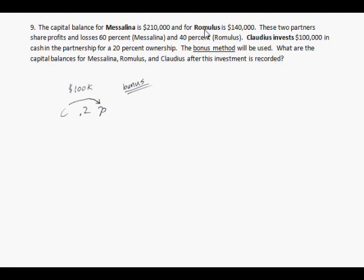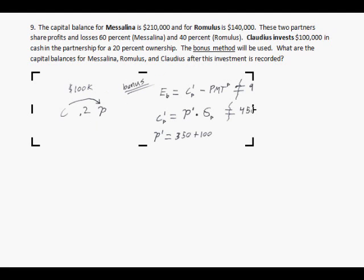But in this problem, we're using the bonus method. Basically, you start out by figuring out the excess bonus, and the excess bonus is equal to capital of the newcomer, his ending capital balance, minus his payment in.